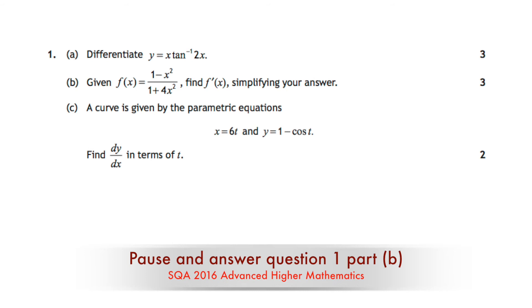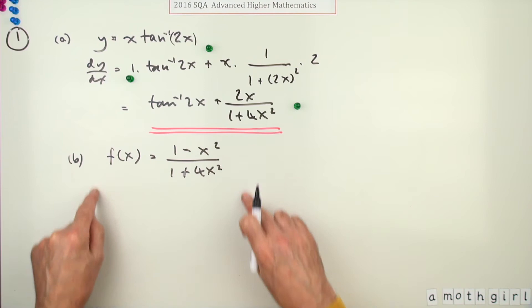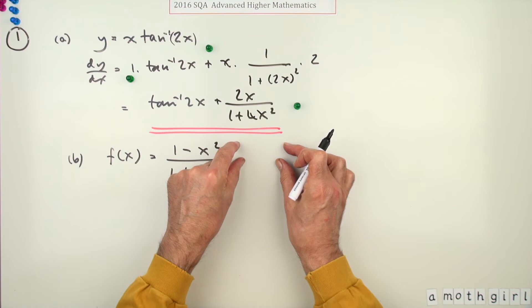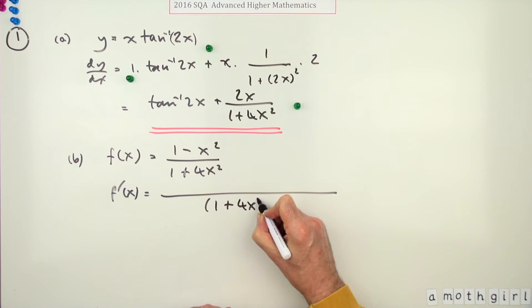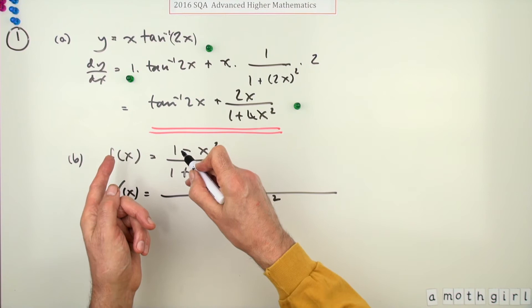So part B, again for three marks, differentiate this. Now this time you've got a quotient. You could turn it back into a product if you like by taking the denominator and putting it on top to the power negative one, but as well just leaving it as a quotient. So differentiate that using the quotient rule, which is square the denominator one plus four x squared all squared.